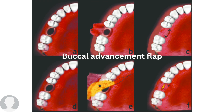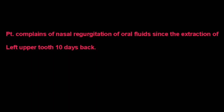The steps of the buccal advancement flap involve raising a flap, performing irrigation, and then suturing the area to close the hole that had opened. We will allow for healing to take place. Throughout the healing procedure, we ask the patient to avoid nose blowing so that the suture won't open, and to avoid anything hot, until the area is completely closed.